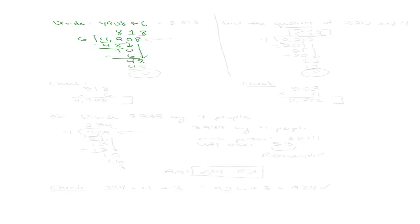6 goes into 48 — it does, 8 times. My remainder is 0. If my remainder is 0, that means my quotient is 818. So 4,908 divided by 6 is 818. If you think of it as money, $4,908 divided by 6 people means each person gets $818. Thinking of it as money really helps some people understand more easily.